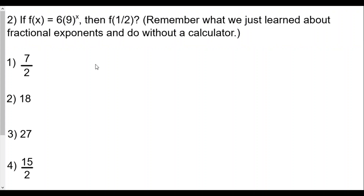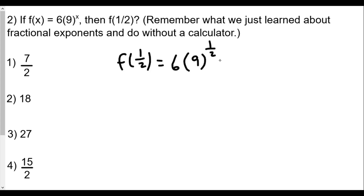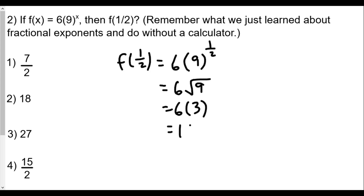We're plugging in one-half, so f(1/2) = 6 times 9 to the one-half power. The one-half power means it's a radical — 9 to the one-half power is the same as the square root of 9. We treat the radical like an exponent and take care of that first. The square root of 9 is 3, so we get 6 times 3, which gives us 18.